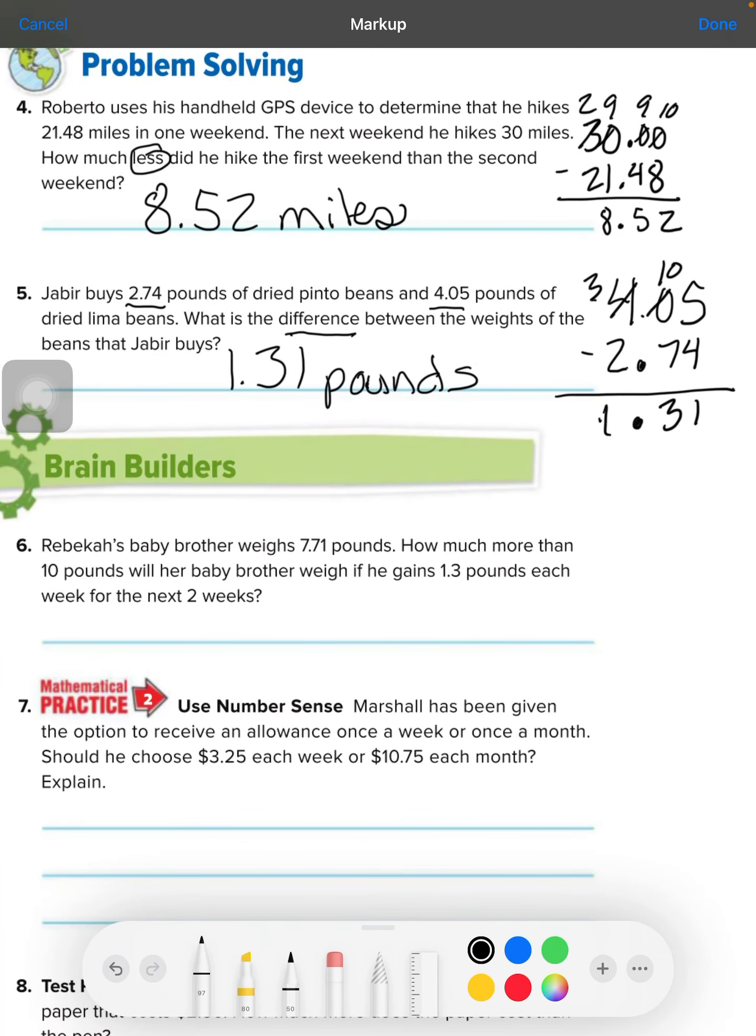Number 7, Rebecca's baby brother weighs 7 pounds and 71 hundredths. 7.71 pounds. How much more than 10 pounds will her baby brother weigh if he gains 1.3 pounds each week for the next two weeks? Okay. So, let's simplify this. We know that he weighs 7.71, right? And then he's going to gain this much weight each week for two weeks. So, we can just go. There's several different ways you can figure it out. The easiest in my head is just go week one, week two, and add all that together.